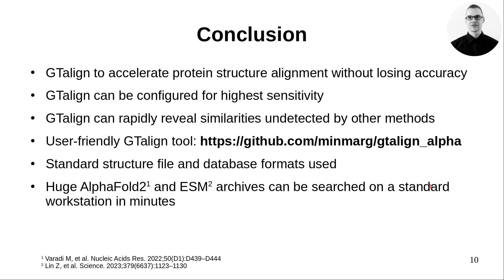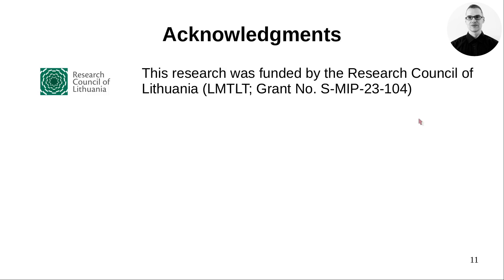GT-Align has been developed to significantly accelerate protein structure alignment and search without losing accuracy. When configured for highest sensitivity, GT-Align can identify structural similarities left undetected by other methods. The implementation is available for GPUs and CPUs, is user-friendly, and uses standard structure file and database formats. Huge AlphaFold and ESM archives are immediately usable by GT-Align, and searching tens of millions of protein structures is estimated to take minutes on a single GPU. This research was funded by the Research Council of Lithuania. Thank you for your attention.